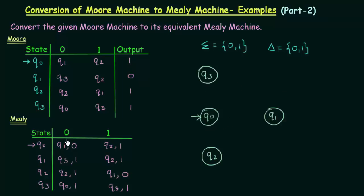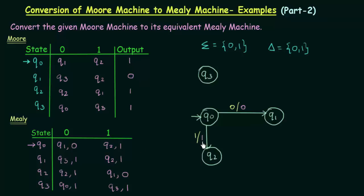Q0 on input 0 goes to Q1, with output 0 — the first one is the input and the second one is the output. And then Q0 on input 1, where does it go? It goes to Q2. On input 1 it goes to Q2 with output 1. So now we have completed Q0.